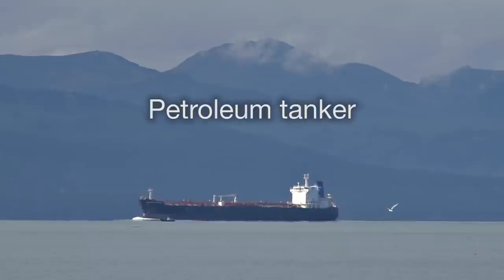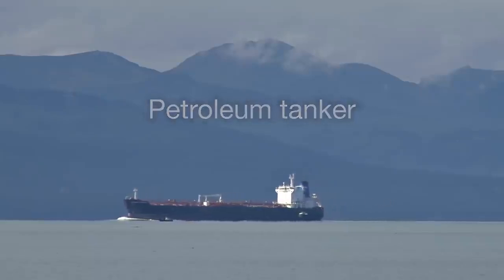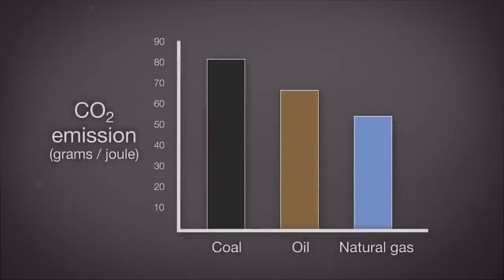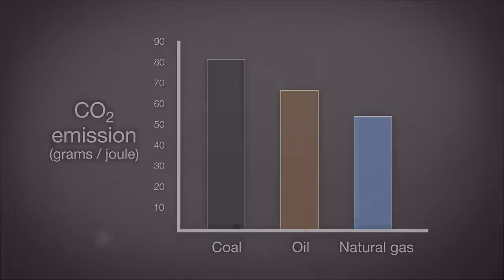Petroleum is cleaner burning than coal. It contains fewer particulates and less sulfur, and in terms of carbon dioxide, oil is preferable to coal — it releases less CO₂, about 86% of the CO₂ for the same amount of heat or energy obtained.